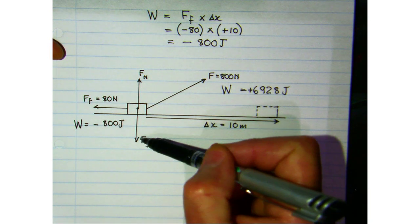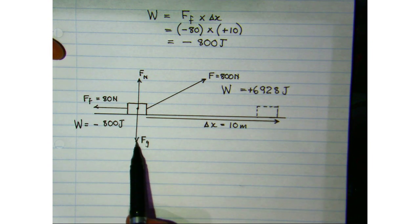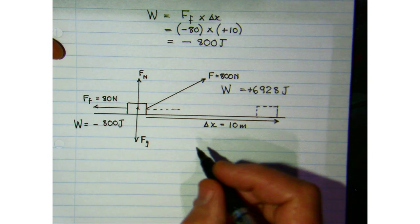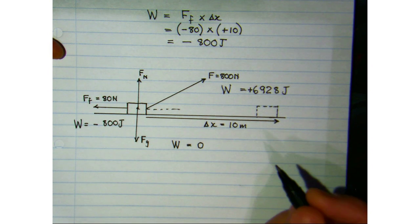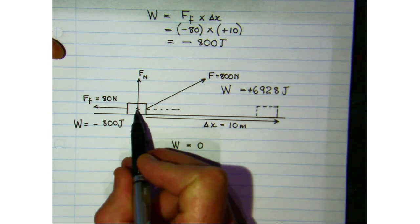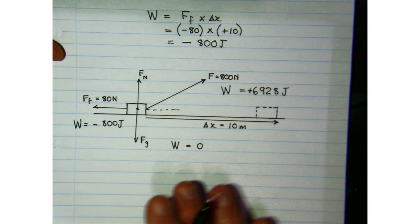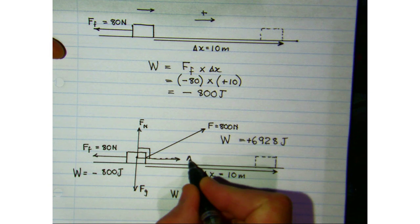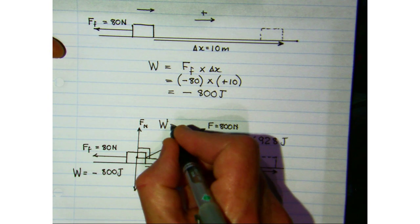Now consider forces acting perpendicular to the displacement. The gravitational force acts perpendicular to the horizontal displacement, so the work done by gravity is zero — it has no component in the direction of displacement since it acts in the vertical plane. Similarly, the normal force acts at right angles to the displacement, so it also has no component in the direction of displacement and does zero work on the box.